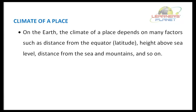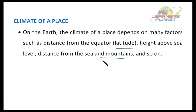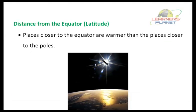Now let us study about the climate of a place. On the earth, the climate of a place depends on many factors such as distance from the equator, which is also called latitude, and height above the sea level, distance from the sea and mountains, and so on. So there are many such factors from which we can depict the climate of the place. First, let us discuss about distance from the equator, that is latitude.